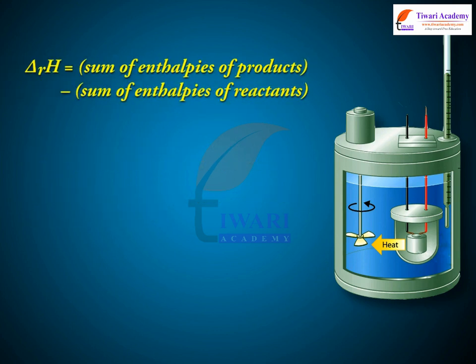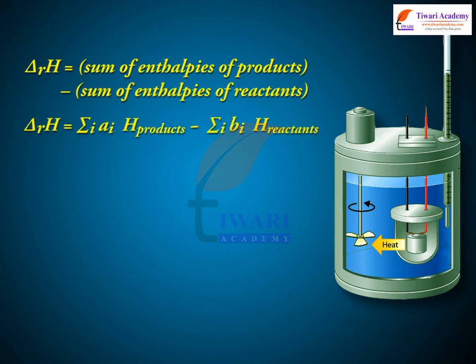Delta RH is equal to the sum of enthalpies of products minus the sum of enthalpies of reactants: delta RH = Σ Ai H(products) − Σ Bi H(reactants), where sigma is used for summation and Ai and Bi are the stoichiometric coefficients of the products and reactants respectively in the balanced chemical equation.